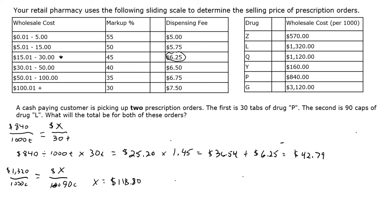Now we mark up $118.80 per the sliding scale. Since the wholesale cost is more than $100, we fall at the bottom tier with a 30% markup. The easiest way is to multiply by 1.3: $118.80 × 1.3 = $154.44. Then we add the dispensing fee of $7.50, bringing us to a total cost of $161.94 for the 90 capsules of drug L — that's the total dispensing cost to the patient.